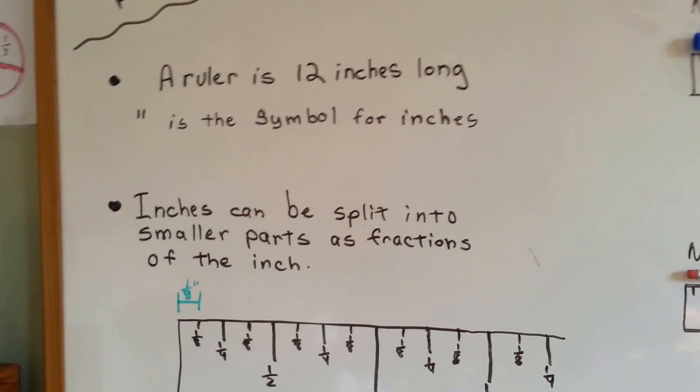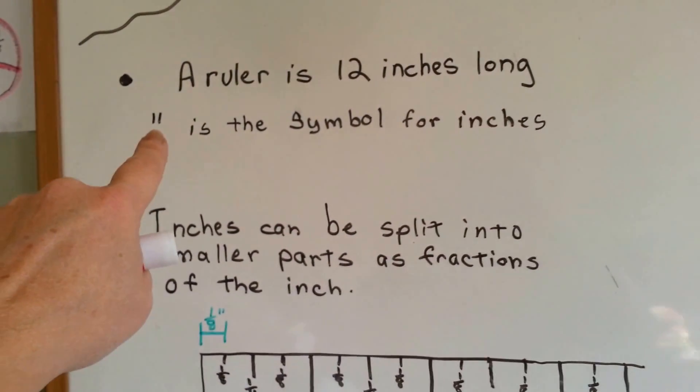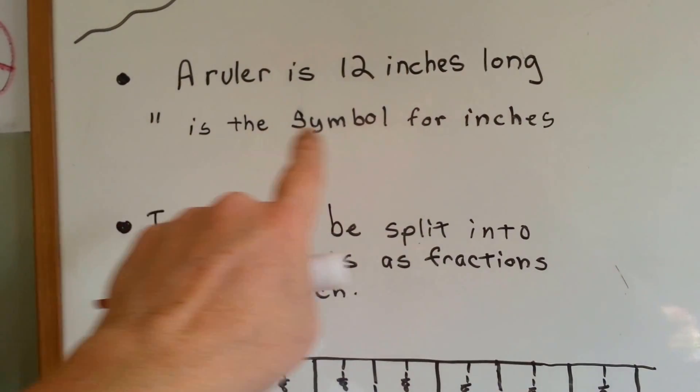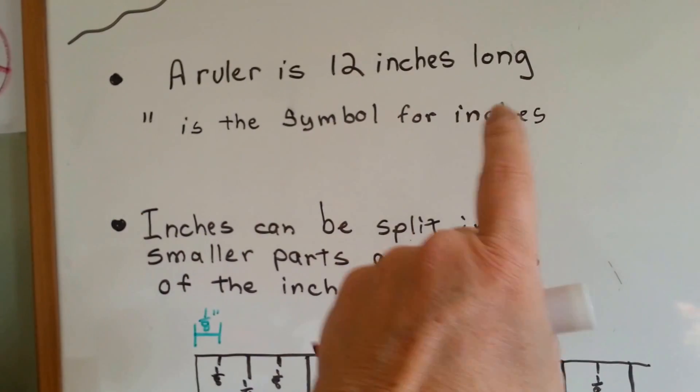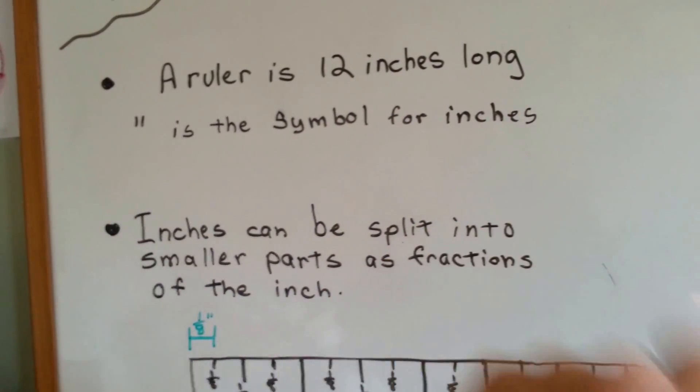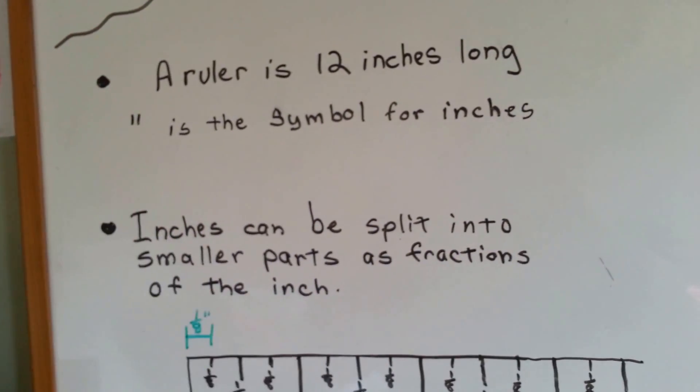It's broken up into inches, and when you see these two little lines, that is the symbol for inches. People want to save time. They don't want to write the whole word inches, they just put those two little lines.